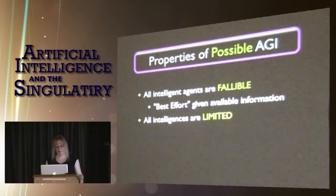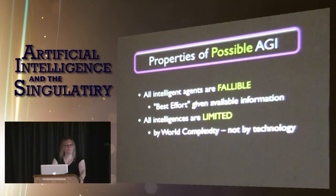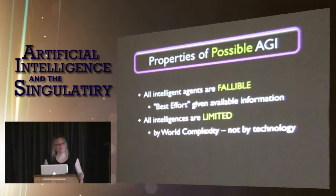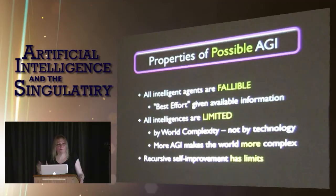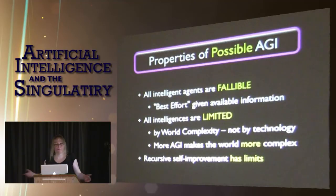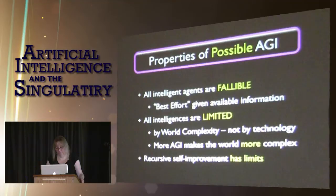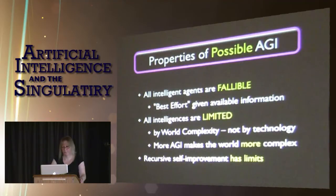Intelligence itself has limits, and it's limited by world complexity, not by technology. You can get a ten times bigger computer and much better code, but the limit of intelligence is the fact that the world is complex and changes behind your back. If you add more AGI to the world, it gets more complex — so you can't really win. Furthermore, recursive self-improvement — the idea that a computer can improve its own programming and get better and better — also has limits, because as programmers know, you fix a few bugs and you'll introduce more bugs. As complexity grows, even an AGI can't keep track of it. I don't believe in computers that continuously improve themselves forever, or even significantly.